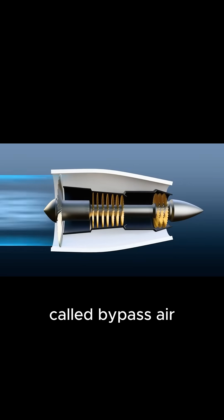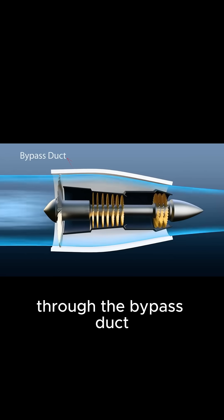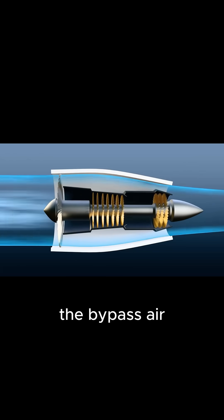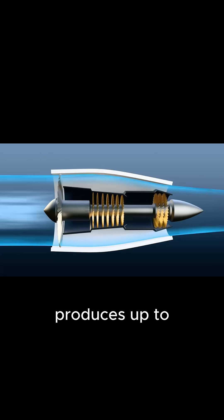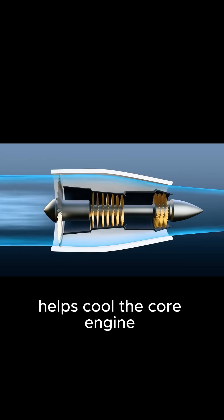The first stream, called bypass air, flows around the core engine through the bypass duct and exits at the back of the engine. The bypass air produces up to 80% of the thrust and also helps cool the core engine.